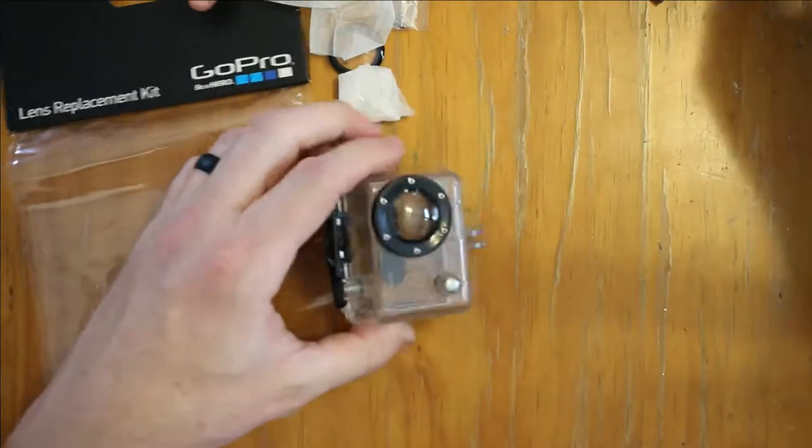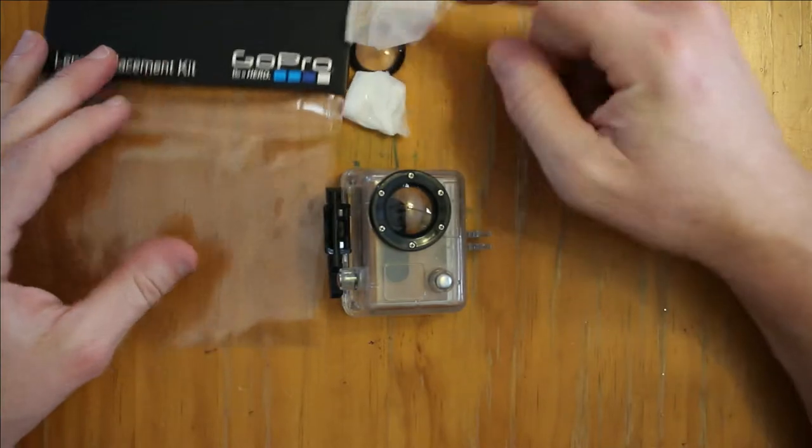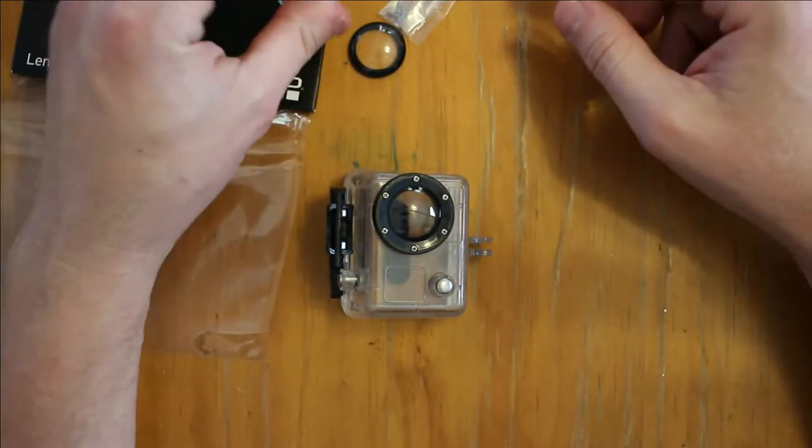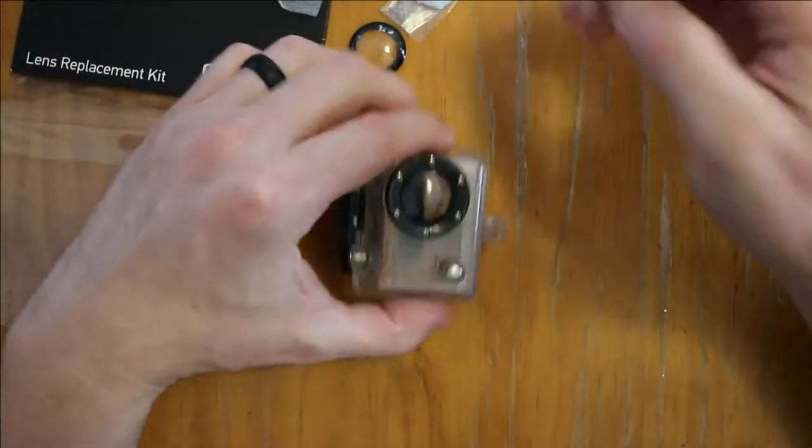What's in that thing? That is the lens kit repair, which came with two lenses. I've already used one, so this is the other one.